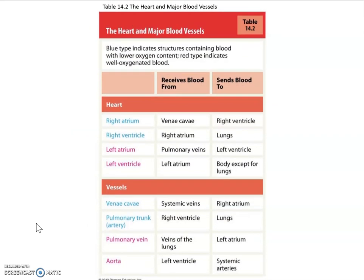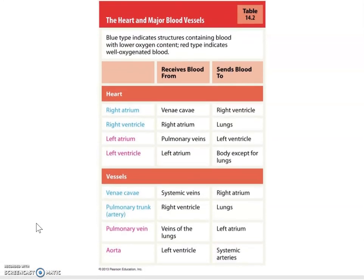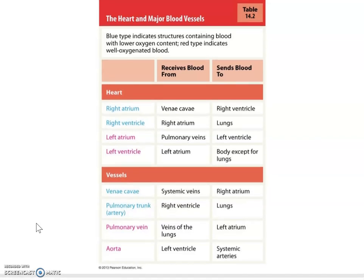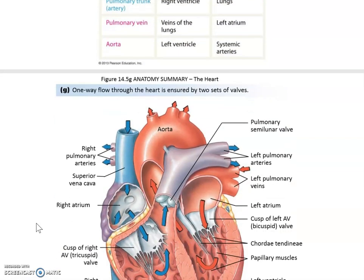Here is an anatomy table for the heart and major blood vessels. The heart has four chambers: right and left atrium, right and left ventricle. Major blood vessels include the superior and inferior vena cava, the pulmonary trunk leaving the right ventricle, the pulmonary vein bringing blood back from the lungs to the left side, and the aorta leaving the left ventricle.